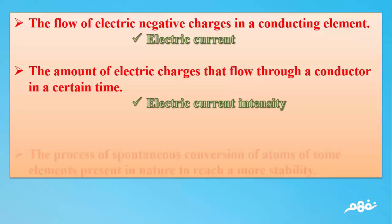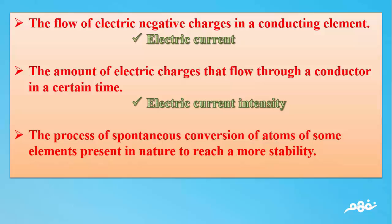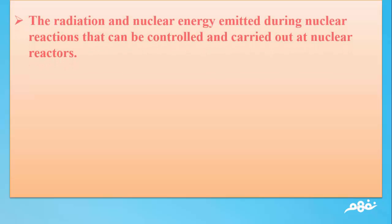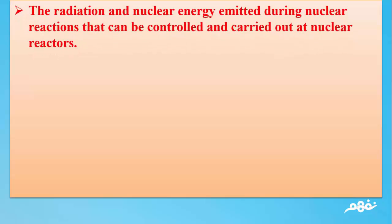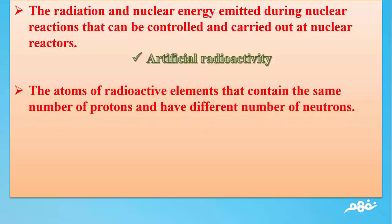Number 18: The process of spontaneous conversion of atoms of some elements present in nature to reach a more stable state. The answer: Natural radioactivity. Number 19: The radiation and nuclear energy emitted during nuclear reactions that can be controlled and carried out at nuclear reactors. The answer: Artificial radioactivity. Number 20: The atoms of radioactive elements that contain the same number of protons and have different number of neutrons. The answer: Isotopes.